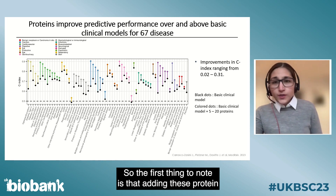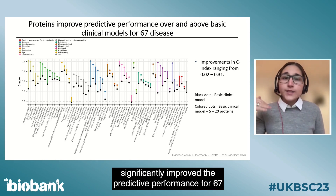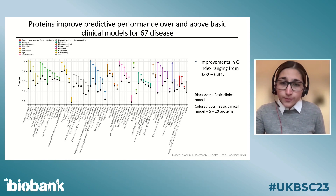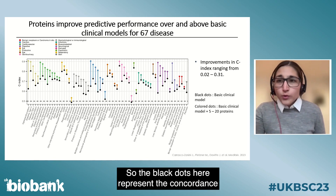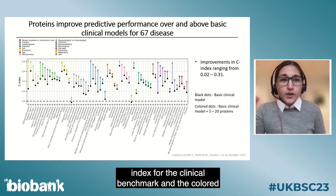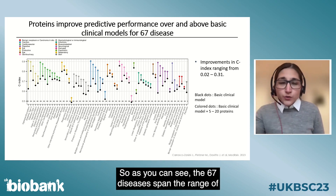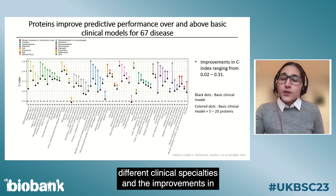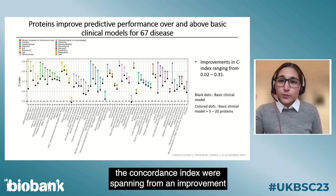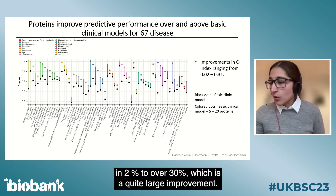The first key finding is that adding protein signatures on top of clinical risk factors significantly improved predictive performance for 67 of the diseases under study. The black dots represent the concordance index for the clinical benchmark, and the colored dots represent the clinical-plus-protein models. These 67 diseases span a range of clinical specialties, and improvements in the concordance index ranged from 2% to over 30%.